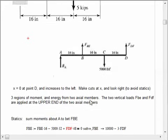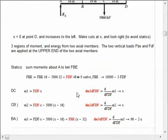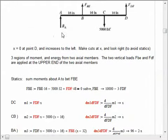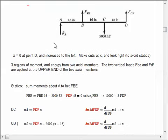So, let's go to work solving this problem. I'm going to assume that X equals zero at point D, the right-hand end, and my X increases as I head to the left. I'll make cuts at any X, and I'm going to look right, which means I don't have to do the statics right now for the reaction at A.